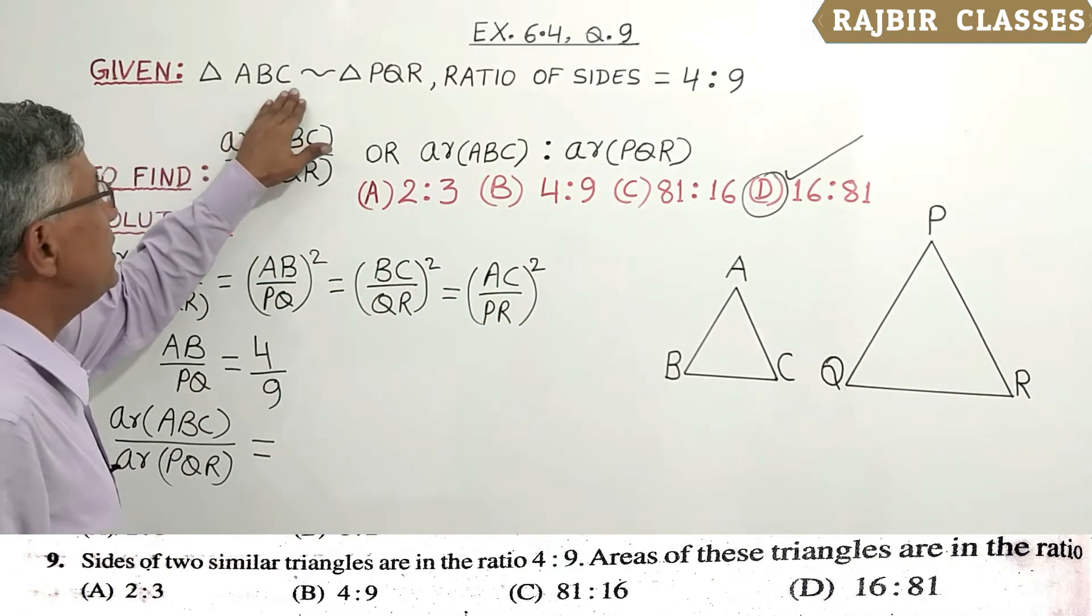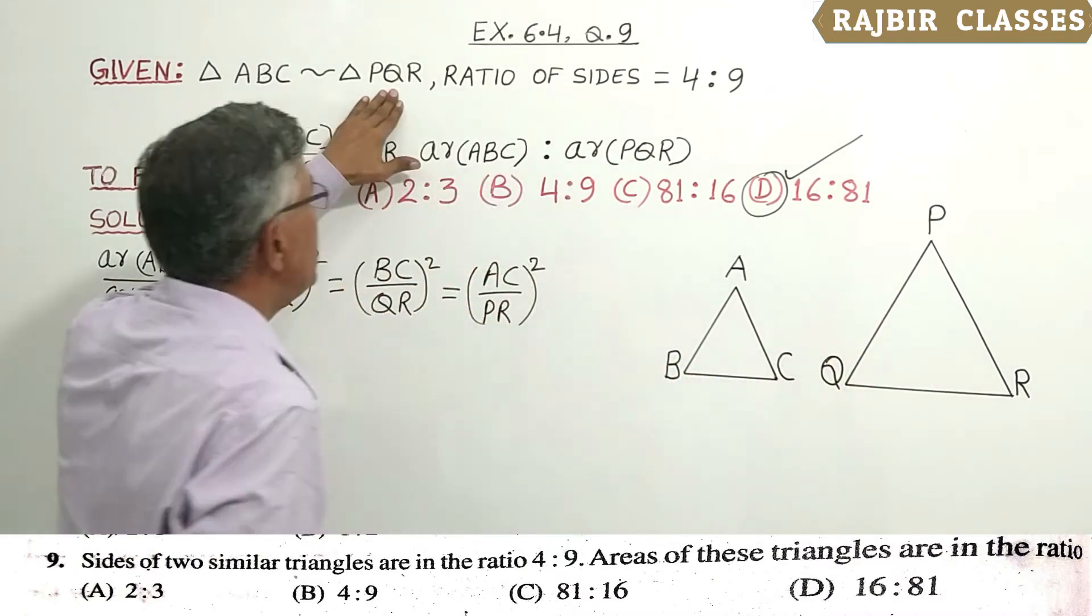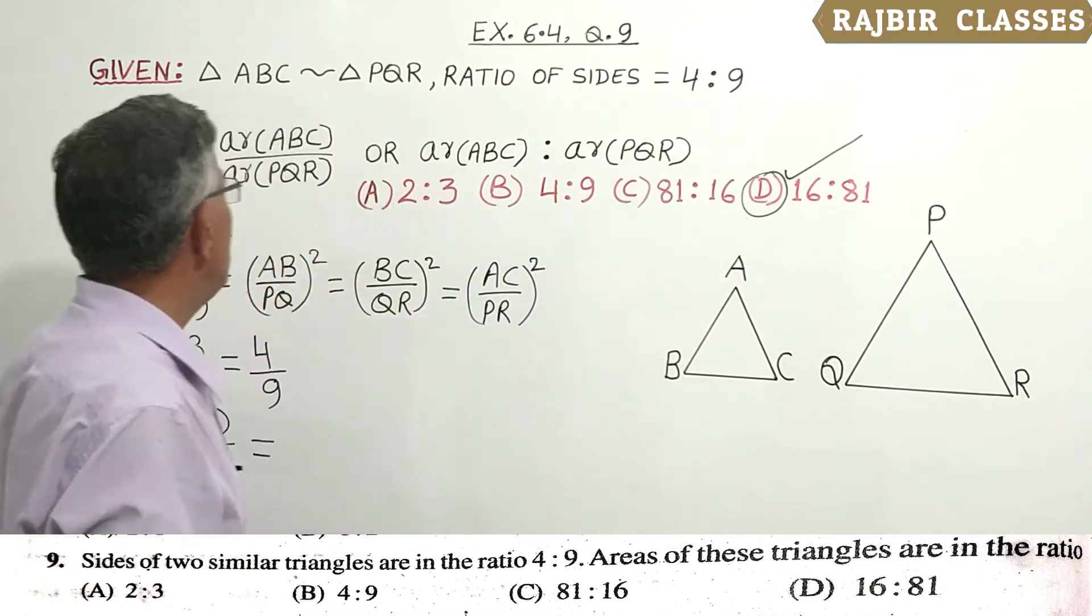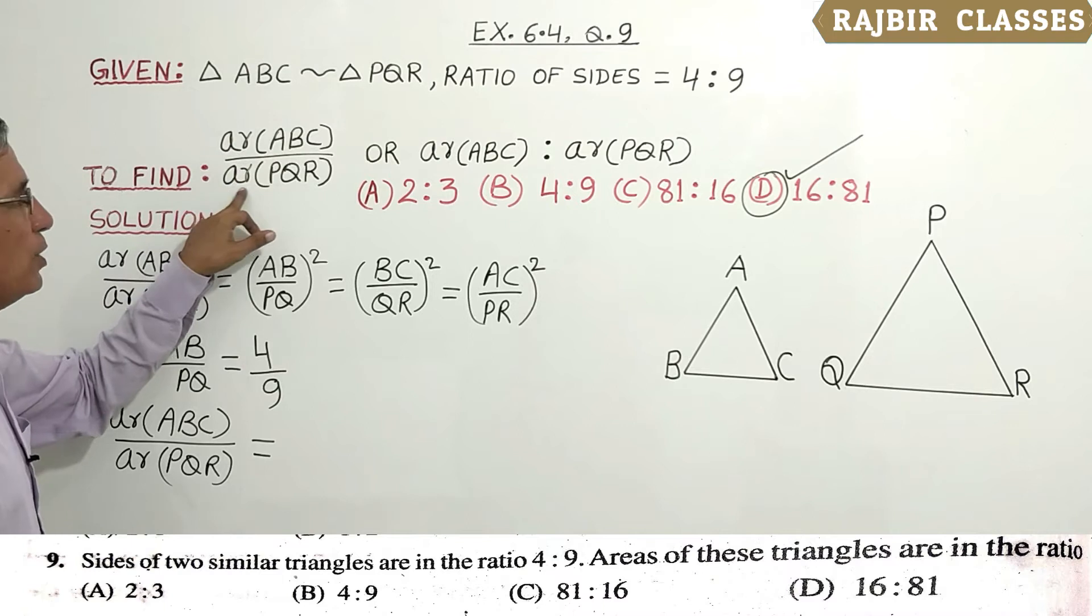Given: triangle ABC is similar to triangle PQR. The ratio of the sides is 4:9. To find: we need to find out area ABC upon area PQR.